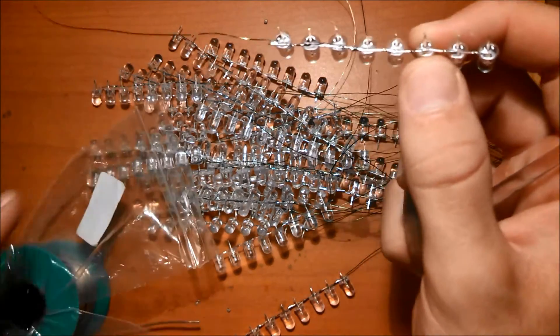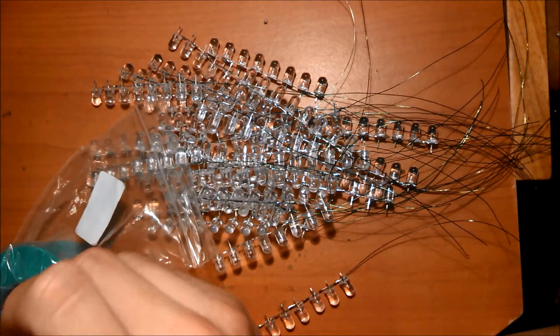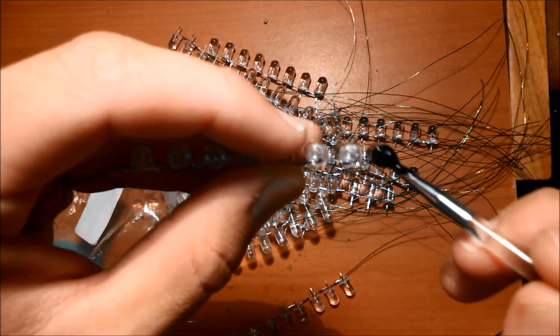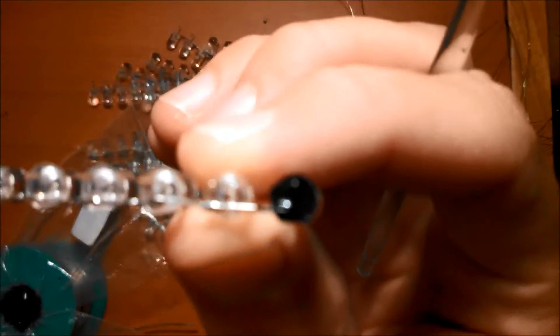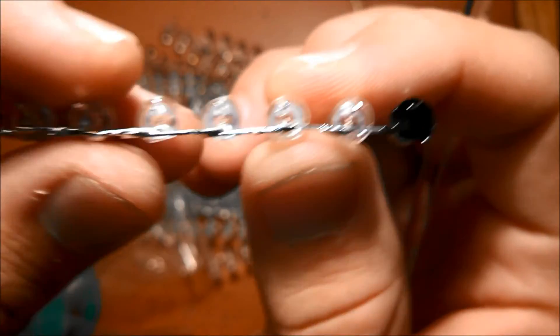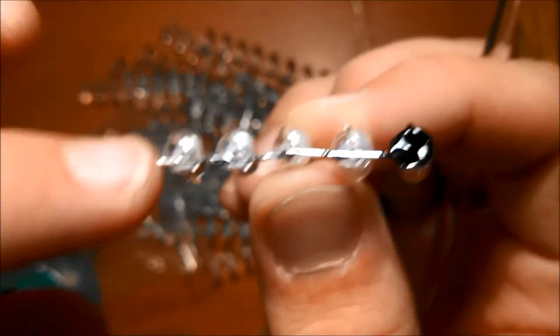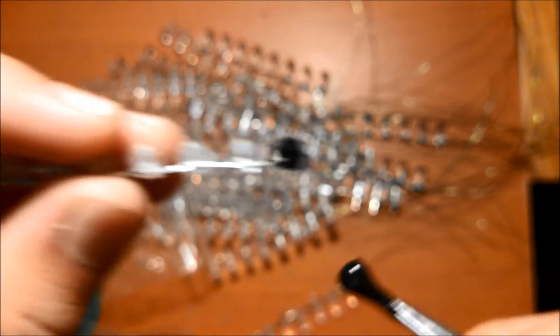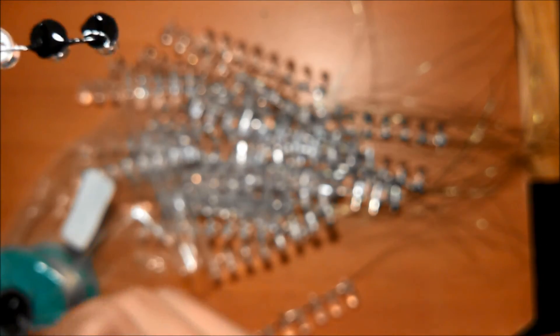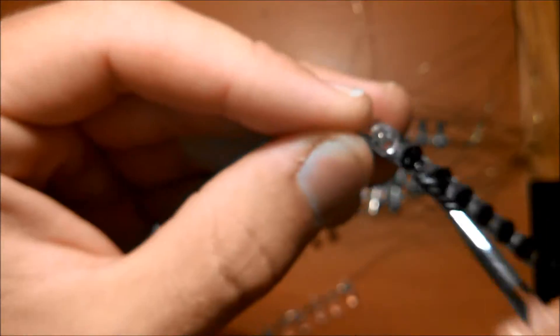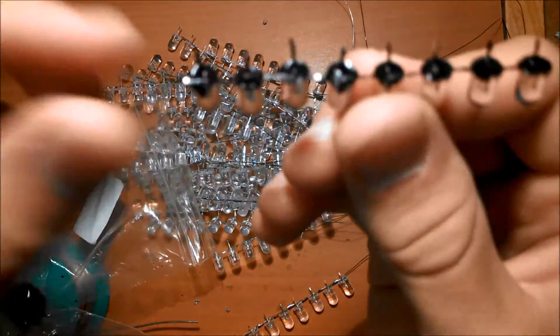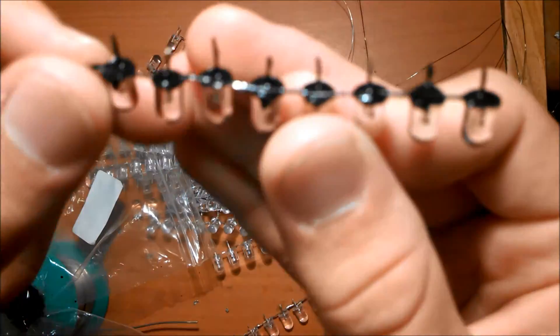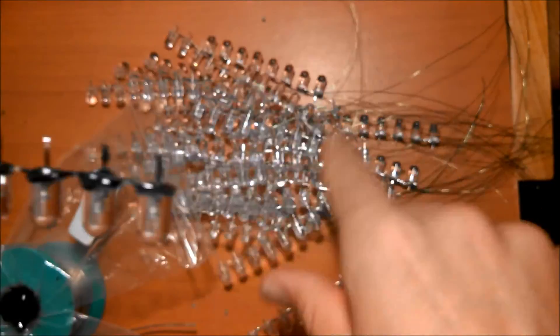Pour your paint out somewhere, take your brush, dip it in the paint, and just paint the back side of each LED. This row is painted here, and I have to do it to the rest of these.